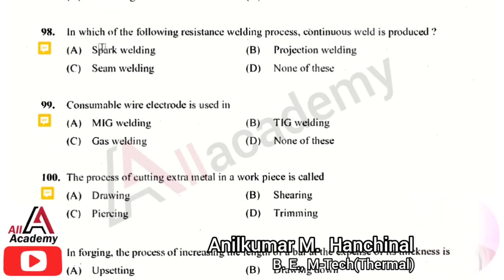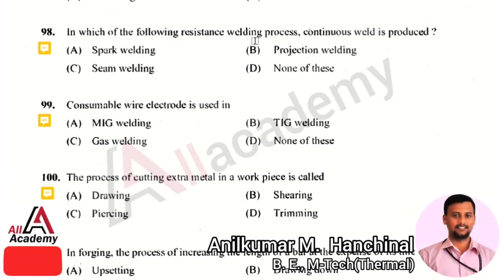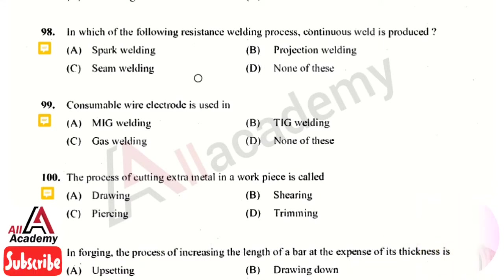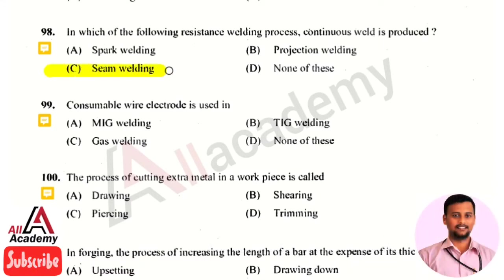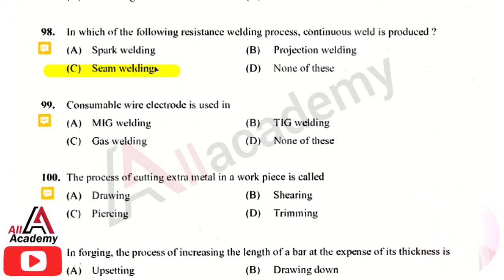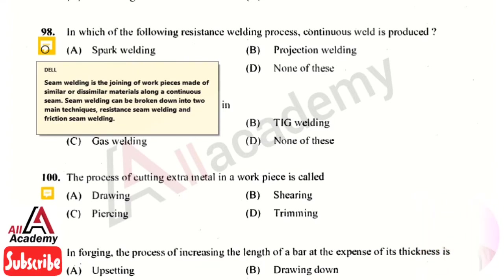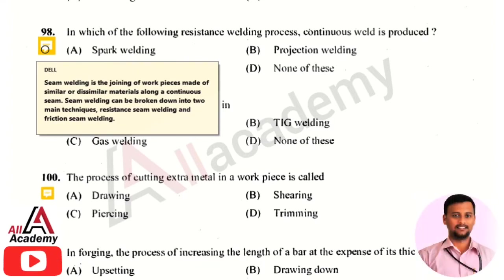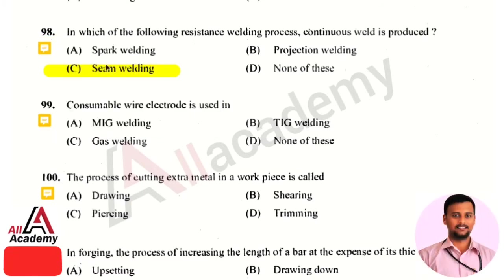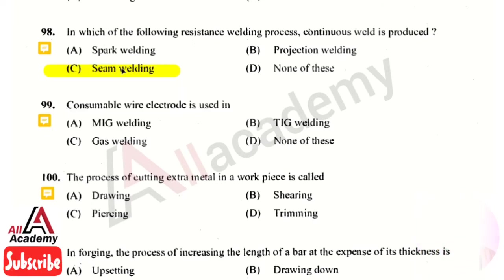The next question: in which resistance welding process is a continuous weld produced — the right answer is option 3, that is seam welding. In seam welding, a continuous weld is produced. Seam welding is a joining process of workpieces made of similar or dissimilar materials along a continuous seam, which is why continuous welding is seen in the seam welding process.